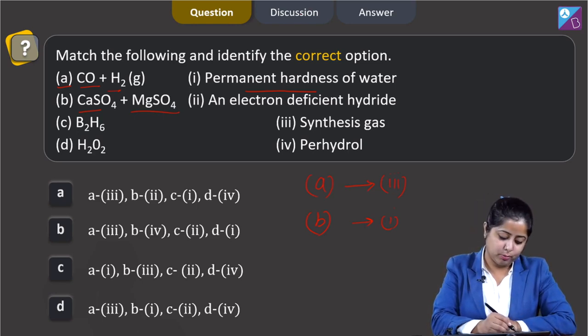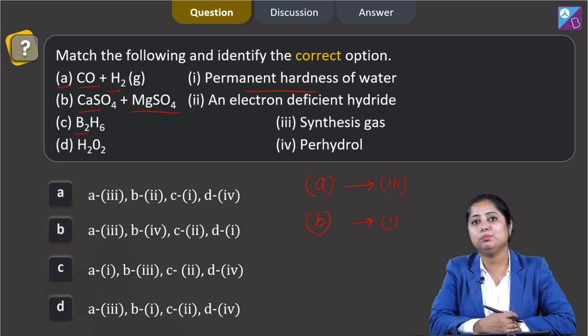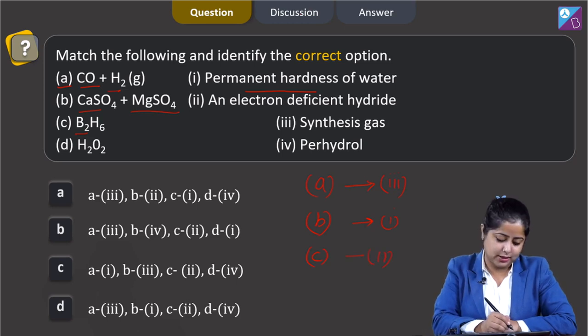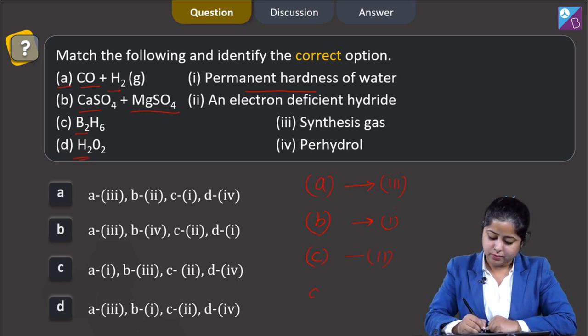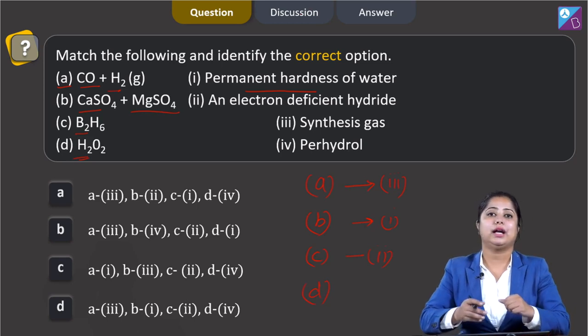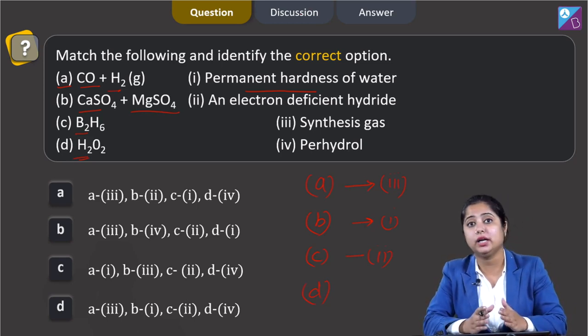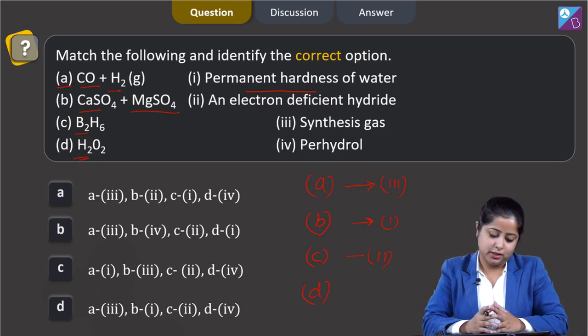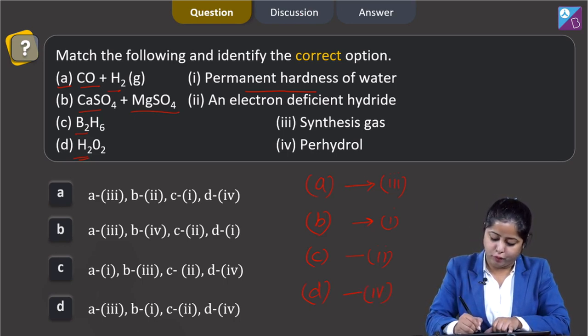Moving to next, B2H6. B2H6 is an electron deficient hydride, that means C has a match 2. Moving to last, H2O2, that is hydrogen peroxide, is sold in market as an antiseptic as perhydrol. That means for D, the correct match is 4.